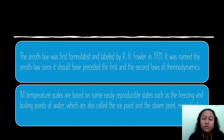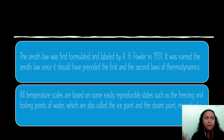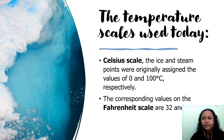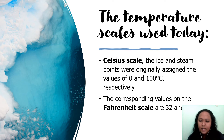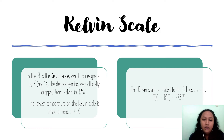The Zeroth Law was first formulated and labeled by R.H. Fowler in 1931. It was named the zeroth law since it should have preceded the first and second laws of thermodynamics. Temperature scales are based on easily reproducible states such as the freezing and boiling points of water — the ice point and steam point. Today we commonly use Celsius and Fahrenheit scales.